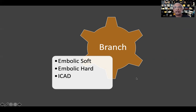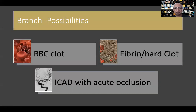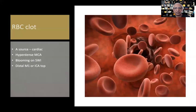When you come to branch occlusions, the possibilities are: RBC clot, fibrin-rich or hard clot, or ICAD with acute occlusion. All three are possibilities, but the pathophysiology of all three is different, and since the pathophysiology is different the way we treat each has to be modified according to the disease.